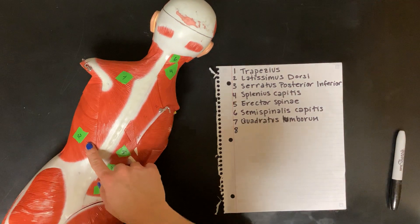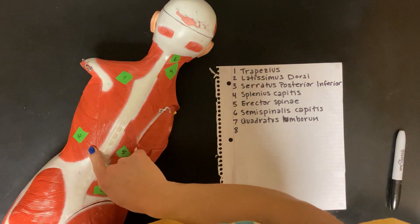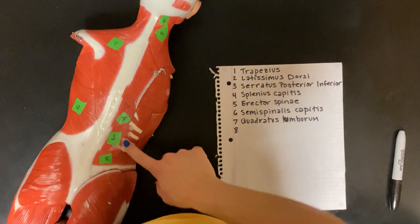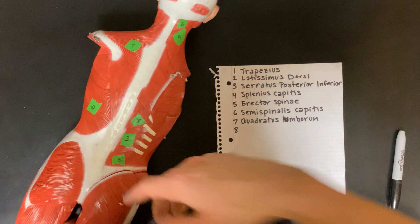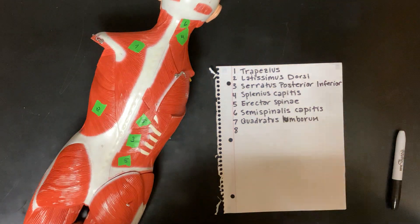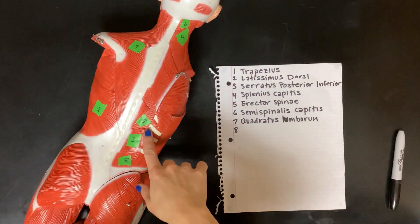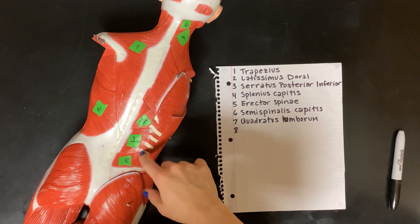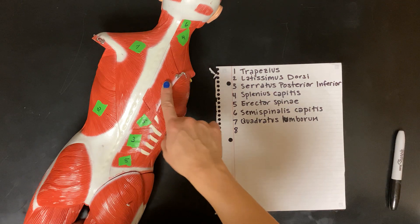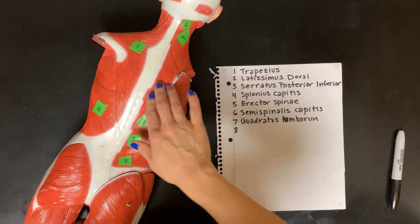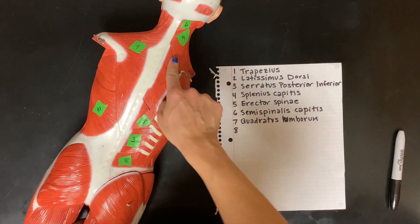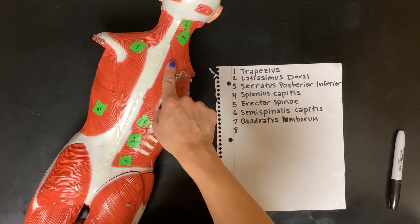Number two is your latissimus dorsi. Number three, you have serratus posterior inferior. Serratus posterior superior you can't see on the models because it's covered by these muscles that you don't need to know for this semester.